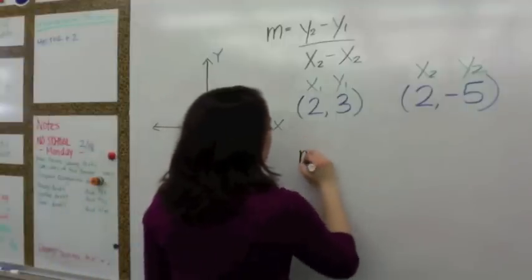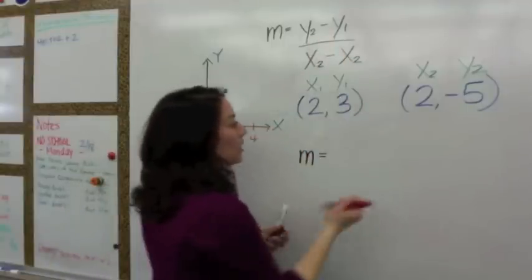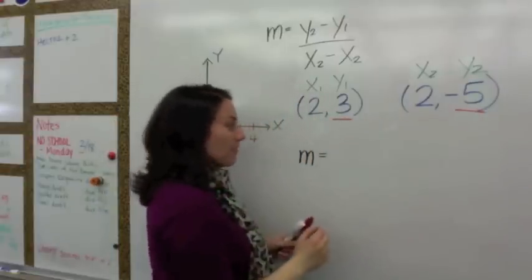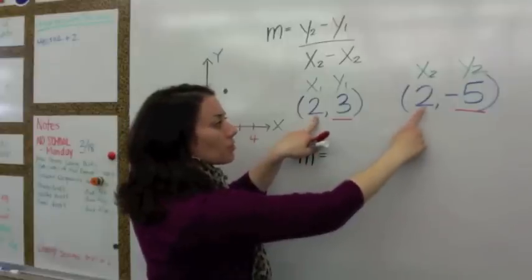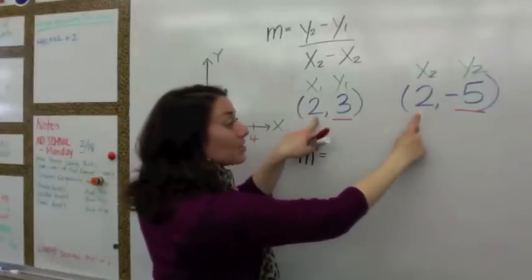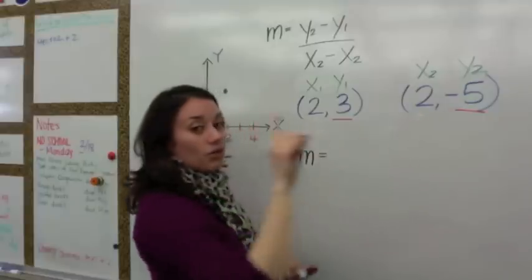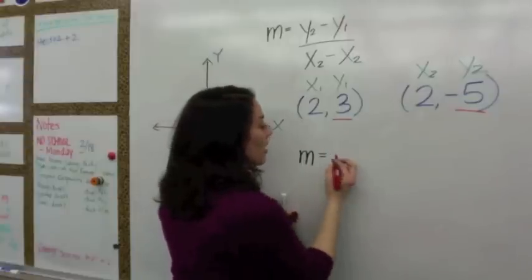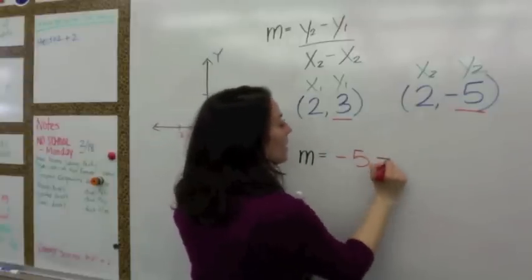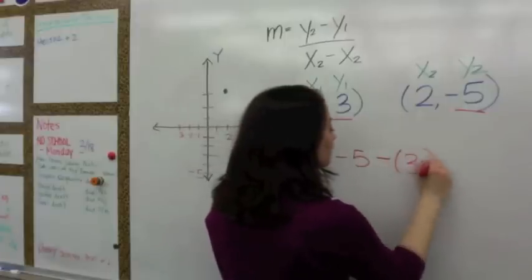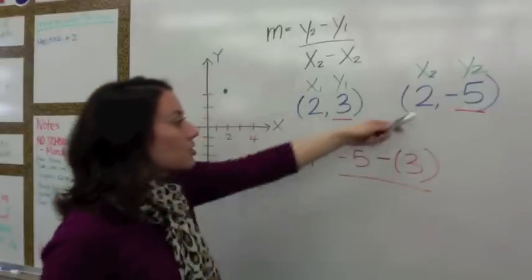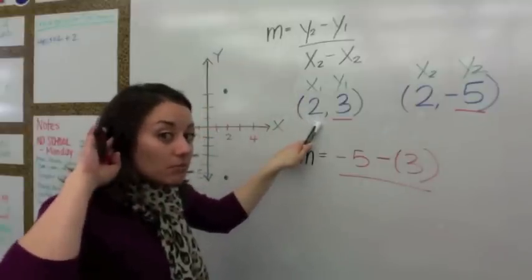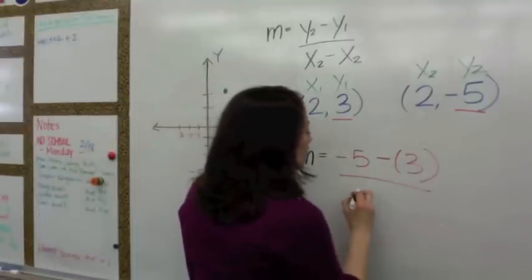Slope, slope — change in y at the top. Let's take a look at our y-coordinates: you have 3 and negative 5 — they're different. What about your x-coordinates? They're both 2. So when your x's are the same, that means you're going to have no slope. Let's subtract y2 minus y1: negative 5 minus positive 3, divided by — your x-coordinates are the same — x2 is 2 and x1 is 2, so this is going to be 2 minus 2.